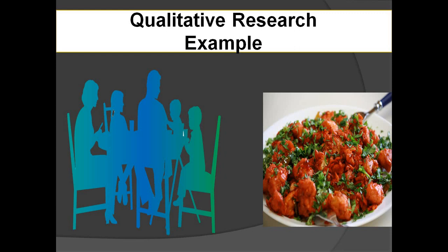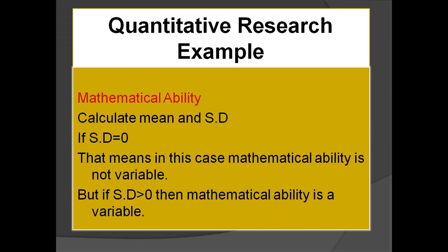We can call opinion about the taste of a dish a variable only if we can measure it through scales of measurement. In quantitative research, a good example is mathematical ability. Suppose we have 10 students and all scores are the same — standard deviation will be zero, so mathematical ability is not a variable. But if one student's score differs, standard deviation is greater than zero, and mathematical ability becomes a variable.